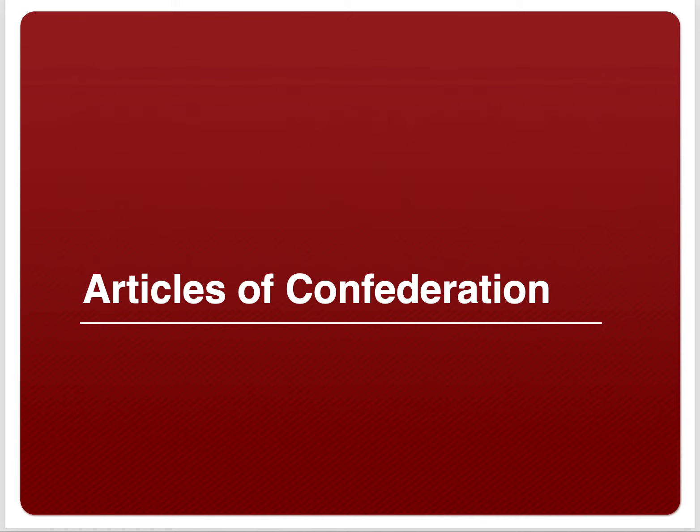The Articles of Confederation was the original governing document of the United States. It was adopted by the Second Continental Congress in 1781, right before the end of the American Revolutionary War. It is our original governing document.